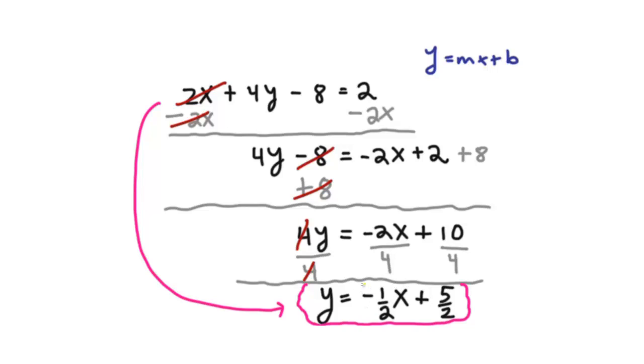That's the number in front of the x. So in this case, it's just the negative 1 half. The negative 1 half is the slope. So we can say, alright, the slope is negative 1 half.